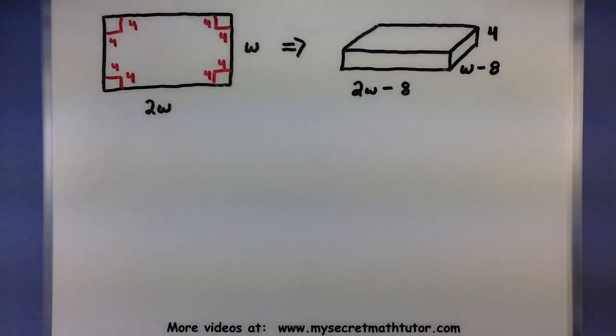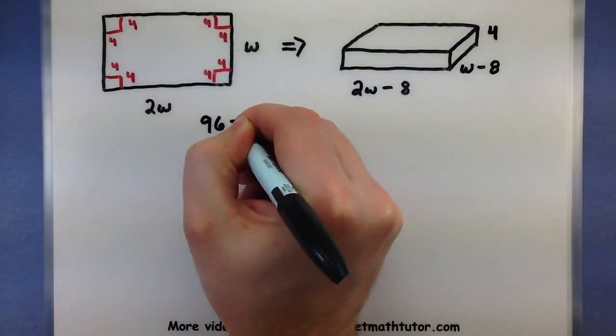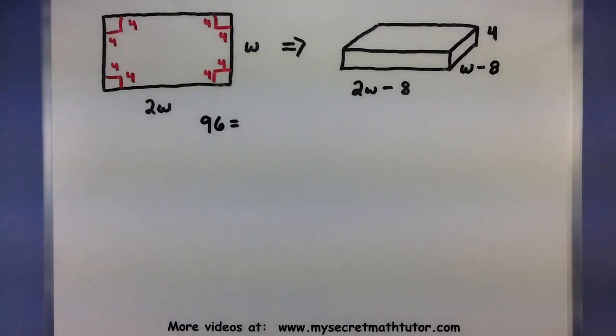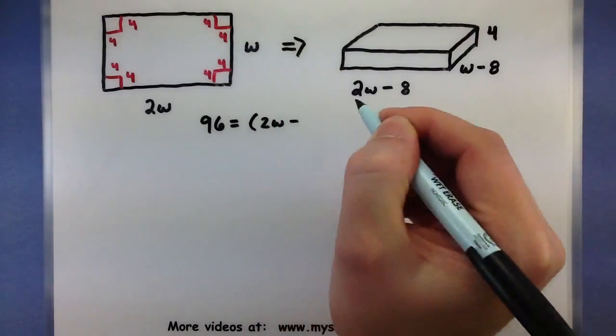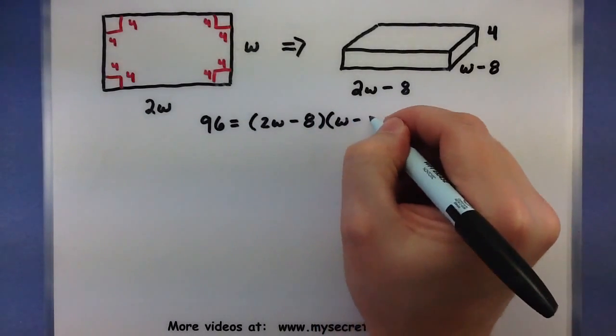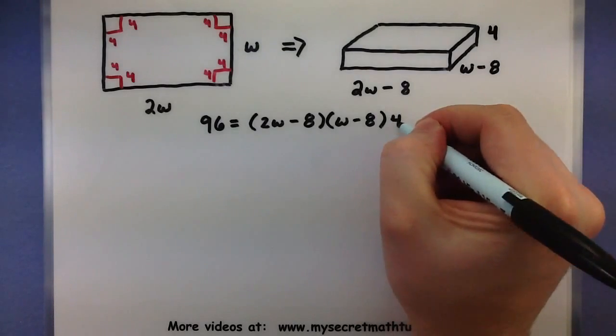Well now that we have the dimensions of what this box looks like, we can start using the fact that we want the volume to be 96 to connect it all together. So the volume 96 comes from the length times the width times the height of this box. So 2W minus 8 times W minus 8 times 4. Awesome.